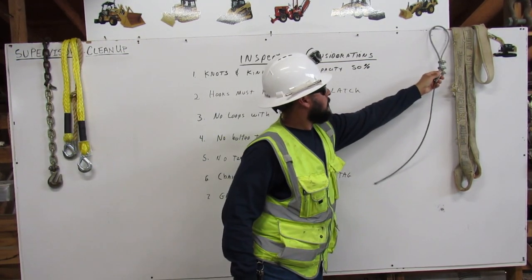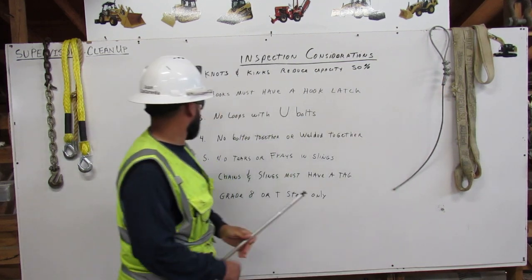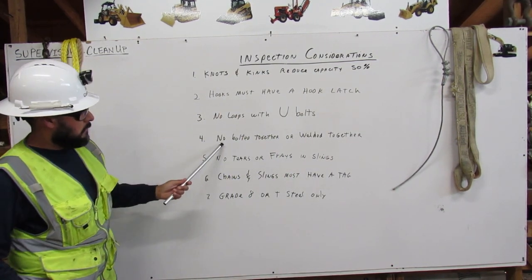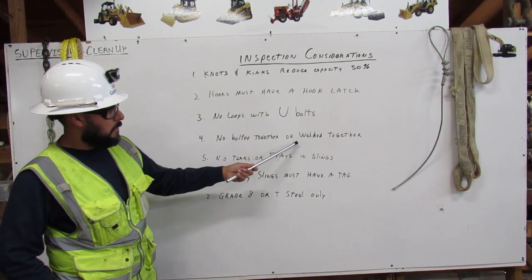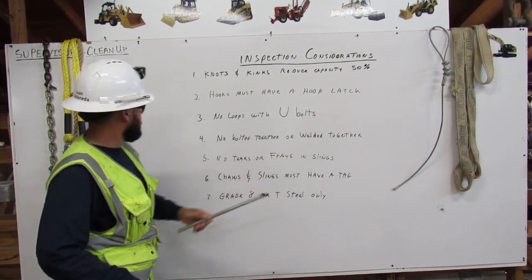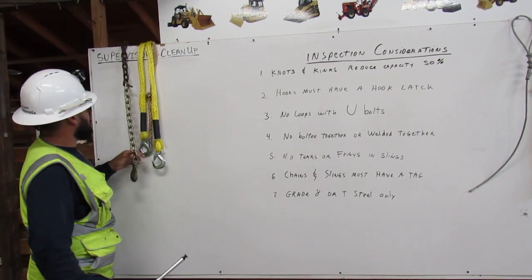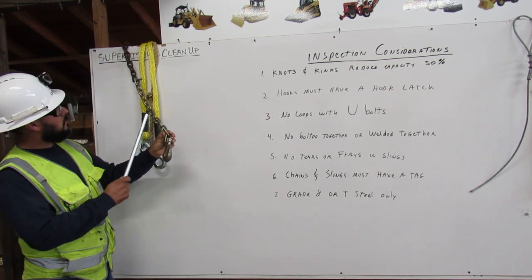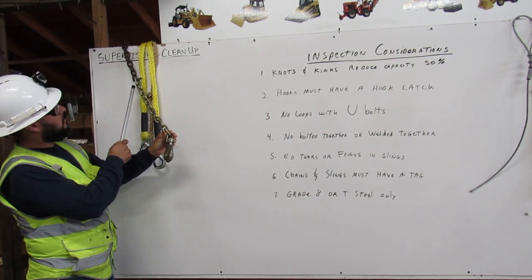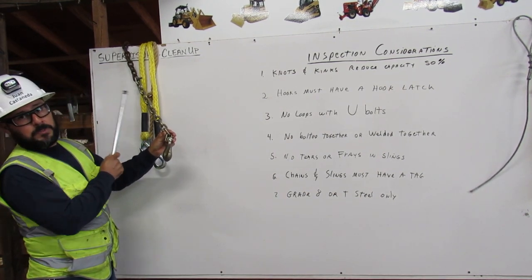Four, no bolt tip together or weld it together. Here's the chain. It was too short, so they bolted together two pieces of chain.